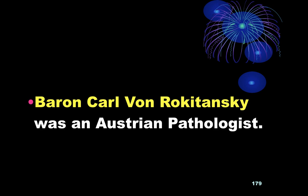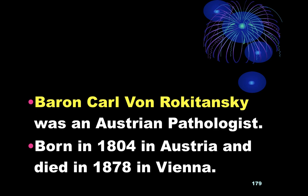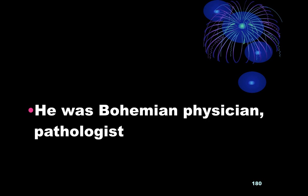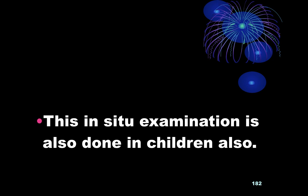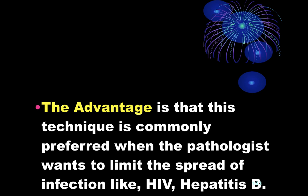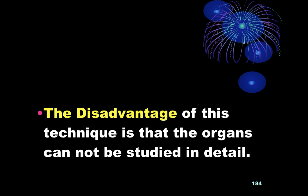Rokitansky's technique: Carl Rokitansky was an Austrian-Bohemian pathologist, born in 1804 in Austria and died in 1878 in Vienna. Rokitansky's method involves in-situ study of the organs; in-situ examination is also done in children. The advantage is that it is preferred when pathologists want to limit the spread of infection like HIV and Hepatitis B. The disadvantage is that the organs cannot be studied in detail.